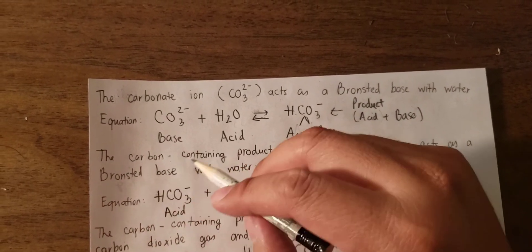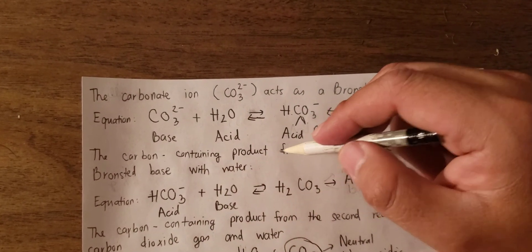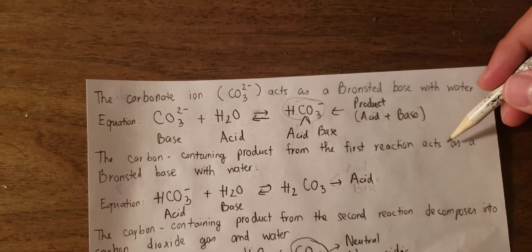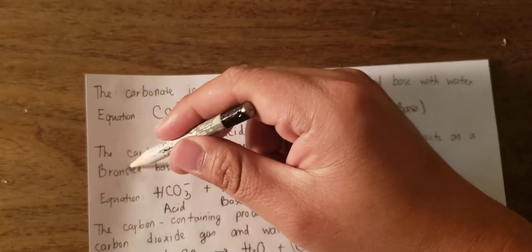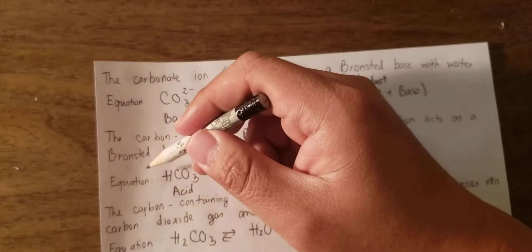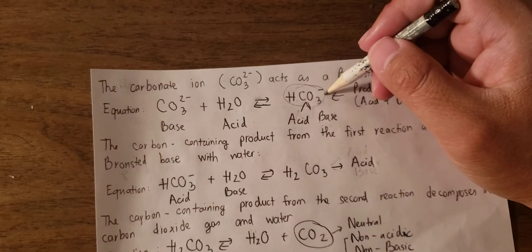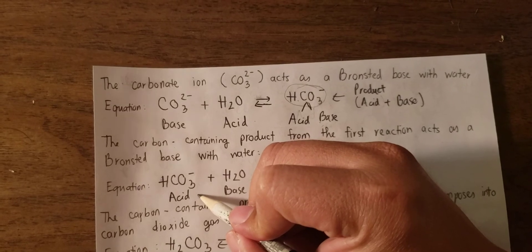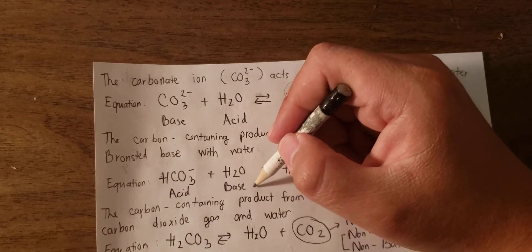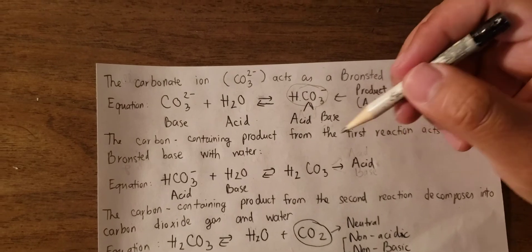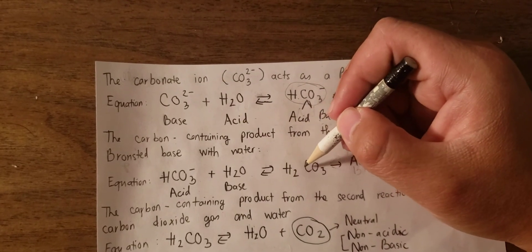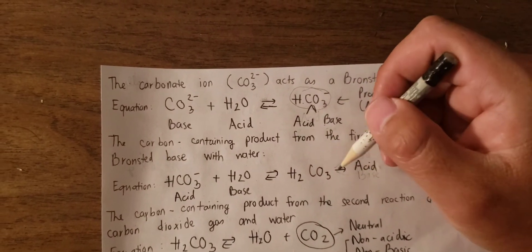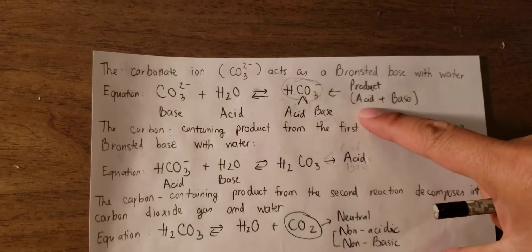The second question: the carbon-containing product from the first reaction acts as a Bronsted base with water. We use the product from the first step, HCO3-, which now acts as the acid, and water acts as the base. The equation gives us H2CO3 as the acid product.